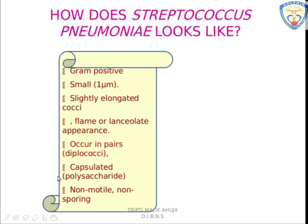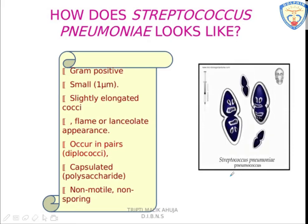The bacterium is spherical — that means these are cocci — but they are not perfect cocci. One end is pointed and the other end is broad. Two cocci form a pair, so it is called diplococci. Each pair is enclosed by a refractile layer called the capsule.